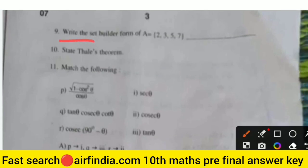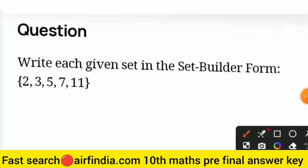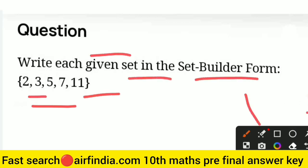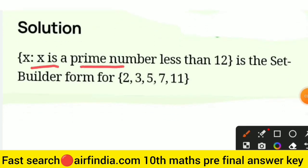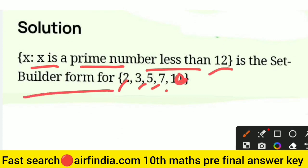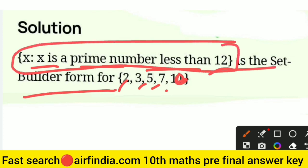Question nine: write the set builder form of {2, 3, 5, 7}. The question asks to write each given set in set builder form for {2, 3, 5, 7, 11}. The solution is: x is a prime number and less than 12. The set includes 2, 3, 5, 7 — here 11 is missing but the real answer uses less than 12. So the set builder form is: {x | x is a prime number and x < 12}.